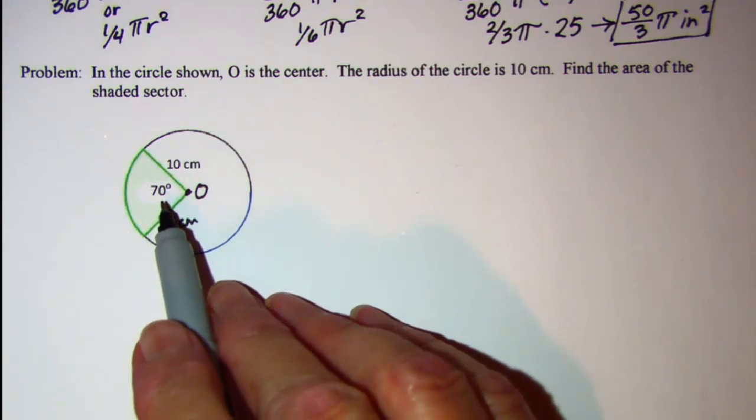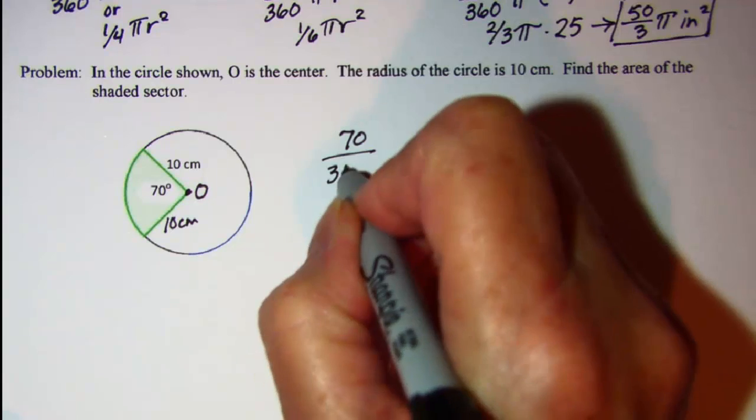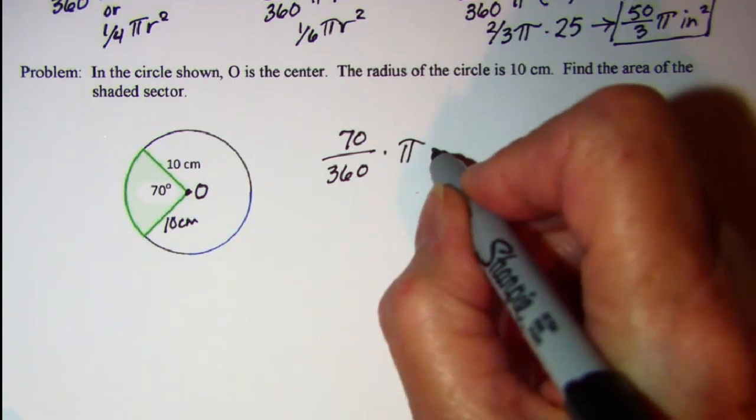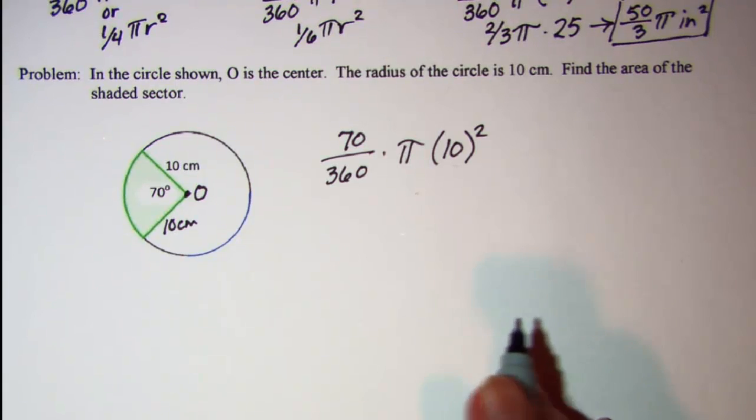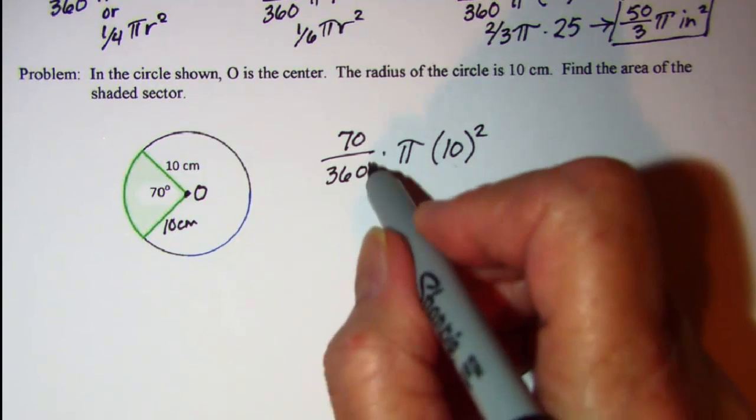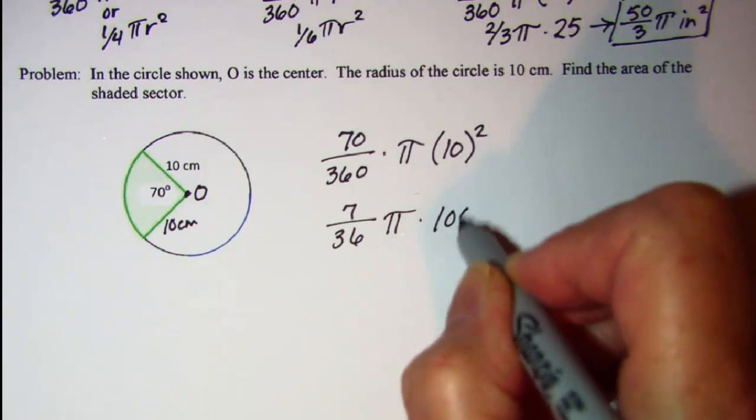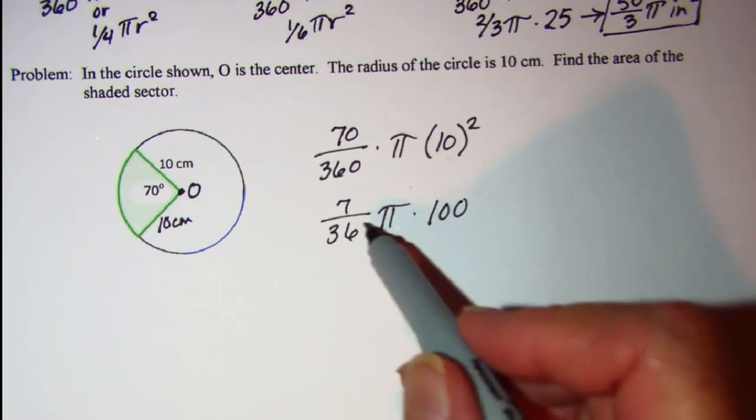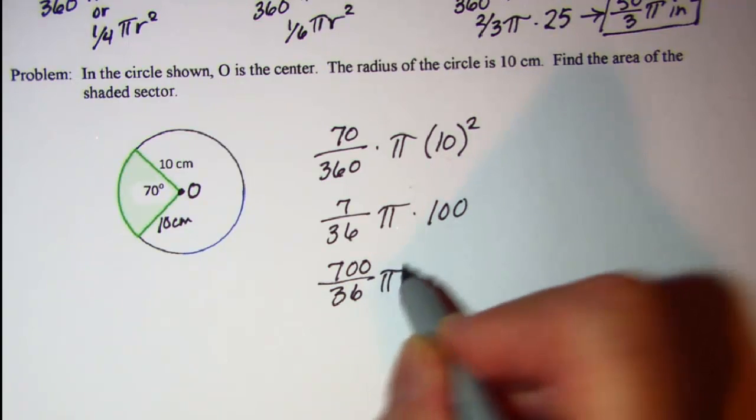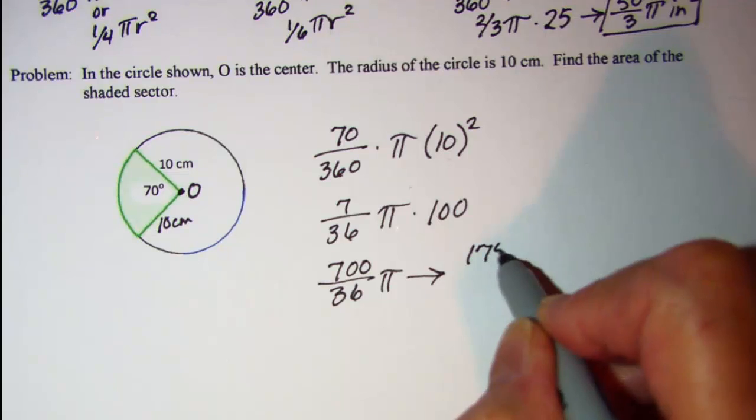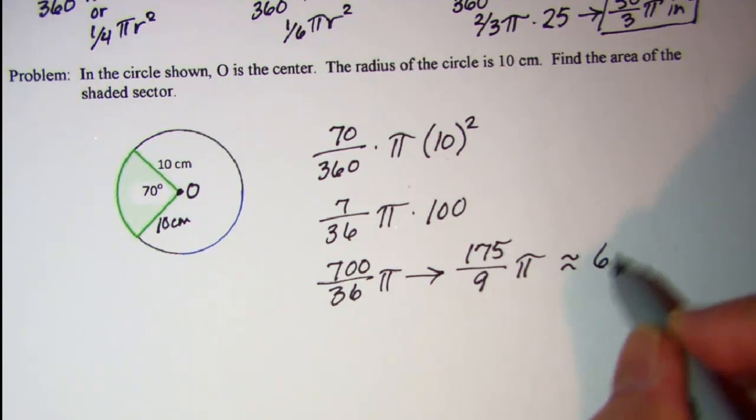Again we want the fraction that the shaded area represents and that would be 70 over 360 and then multiply that by pi r squared. R is 10. Now we can just do the math. This is 7 over 36 times pi times 100 so we have 700 over 36 pi which reduces to 175 over 9 pi or approximately 61.1. My units are centimeters so this is centimeters squared.